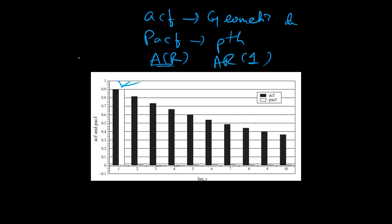It is positive as well, so it can be written as yt equals phi1 times y(t-1) plus ut, where the coefficient is positive — because the y-axis is positive. Had it been in the negative y-axis, the sign of phi1 would have been negative.